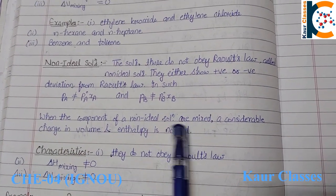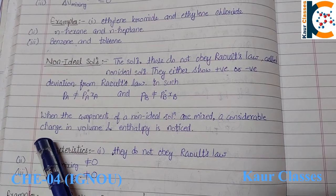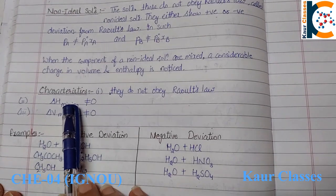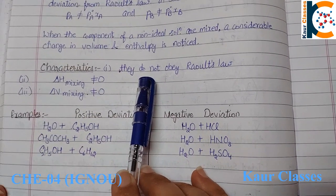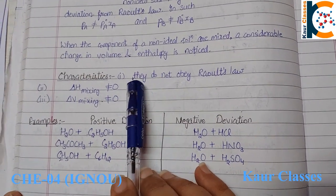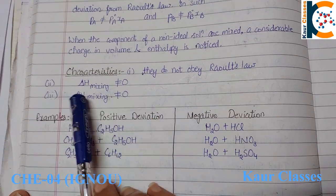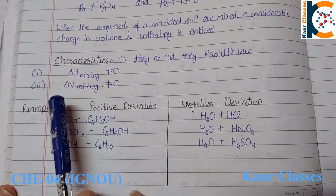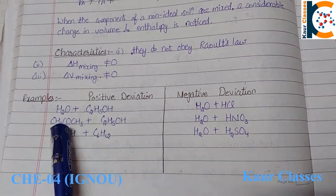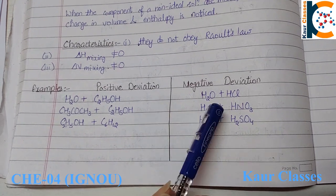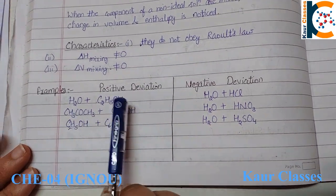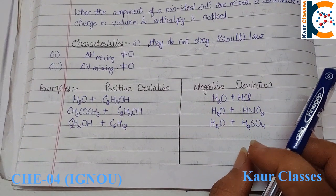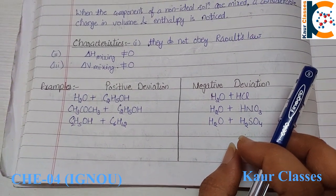For a non-ideal solution, when components are mixed, the change in volume on mixing and the change in enthalpy on mixing are both not equal to zero. Examples of positive deviation include water-ethanol mixtures, while examples of negative deviation include water with certain acids. This completes question 10 for Chemistry 04.